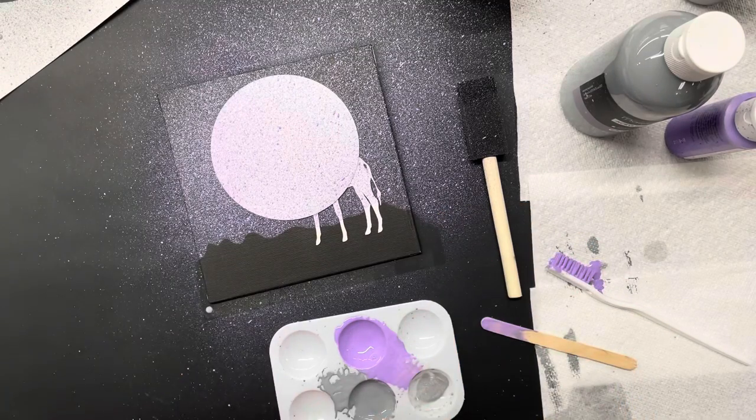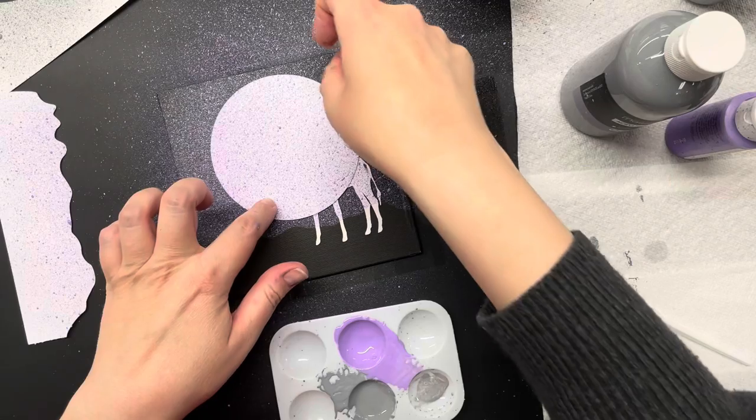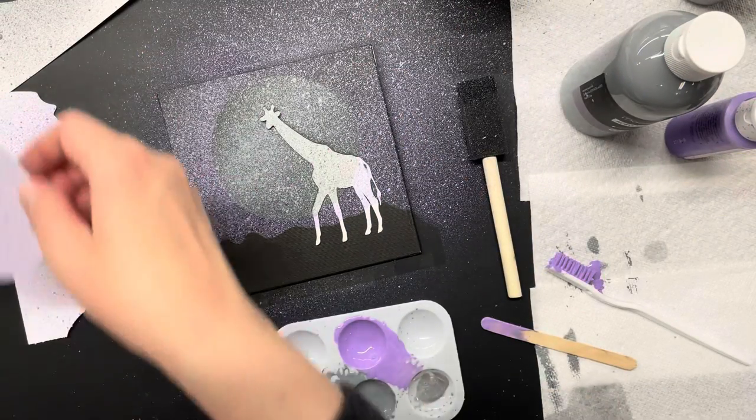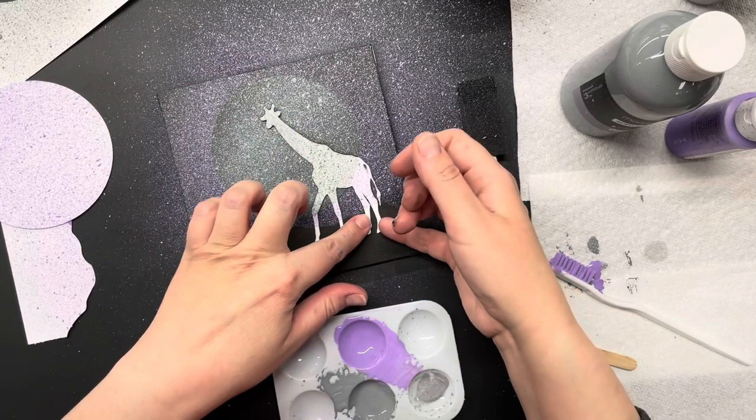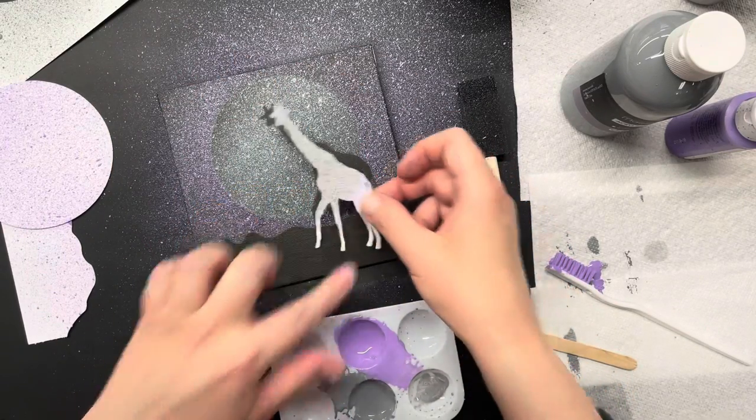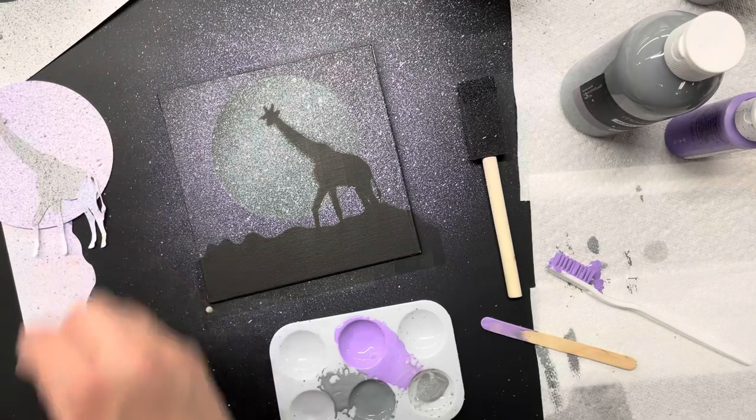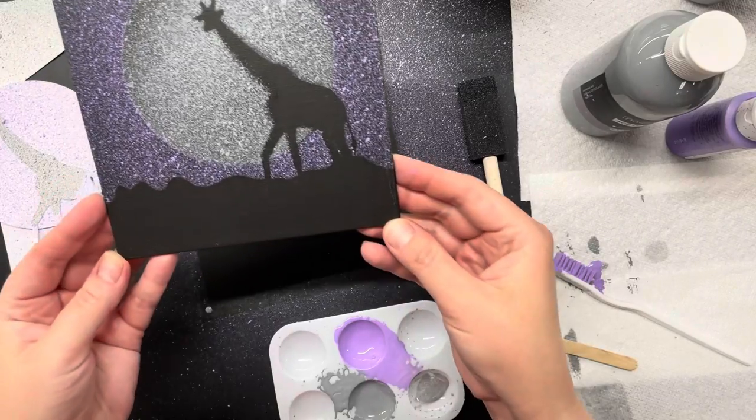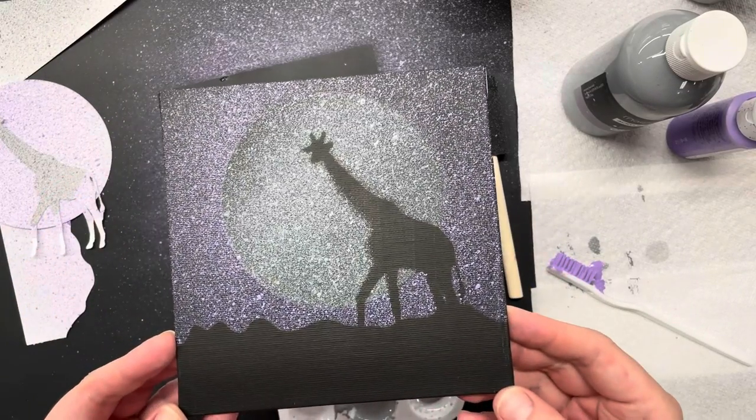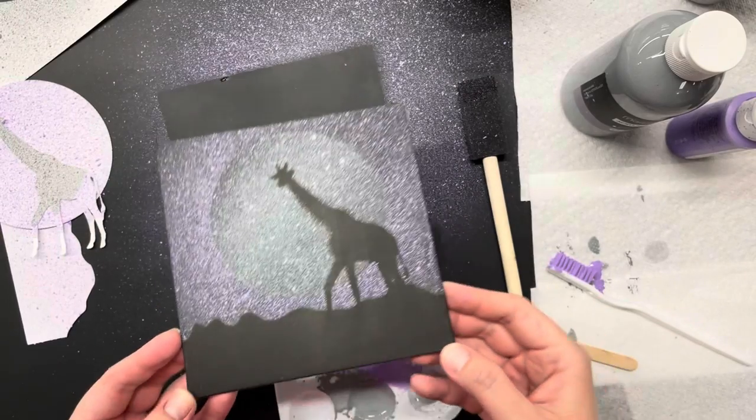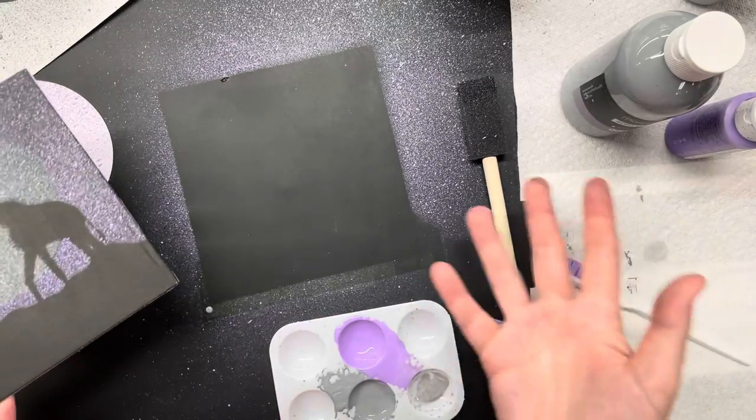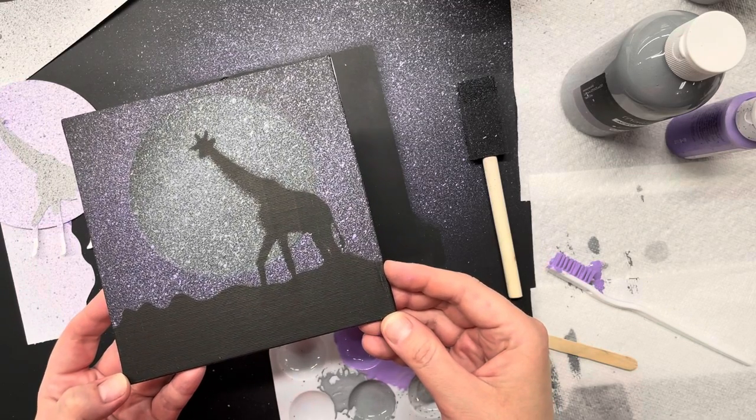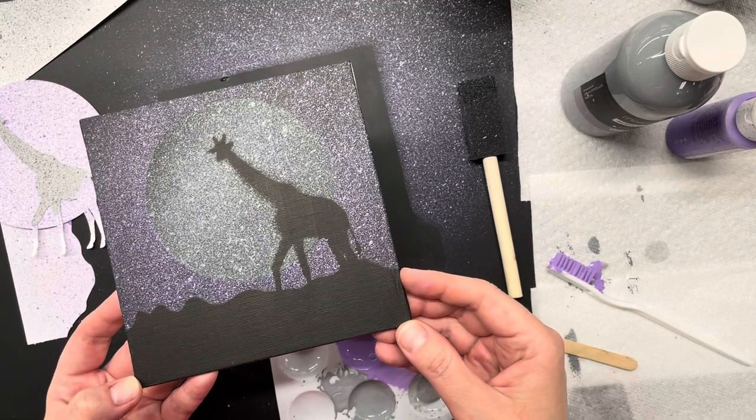So once you've painted your background color now it's time to carefully remove your pieces. You can wait for everything to completely dry, I'm not that patient. So I'm going to remove my moon and now my giraffe and there is my finished art project, something different for you to try. I hope you enjoy this as much as I did, a little bit messy but well worth it. Join me again next week for a new project.